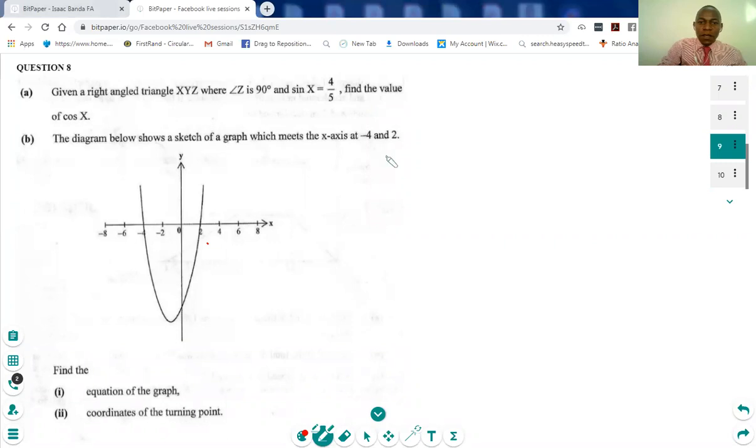Okay, first let's see what is happening. We are given a right-angle triangle, so this triangle is 90 degrees at Z, and x can be at this point, and y can be at that point.